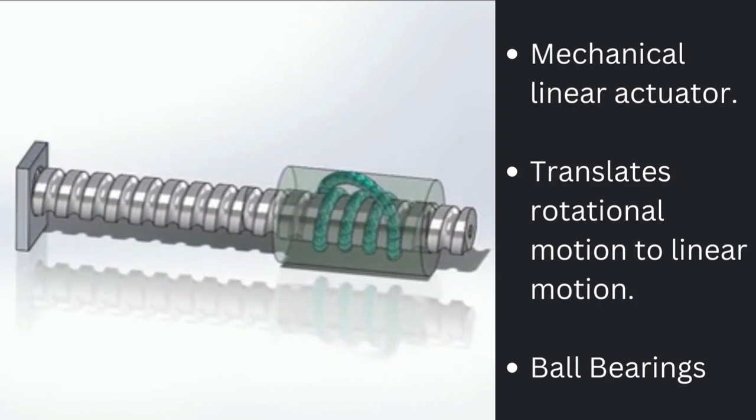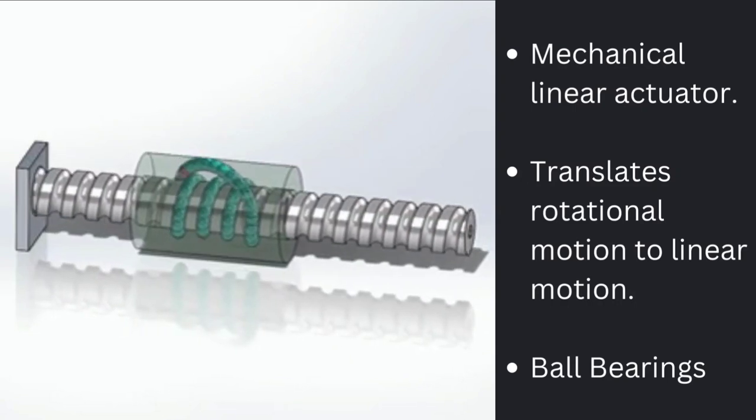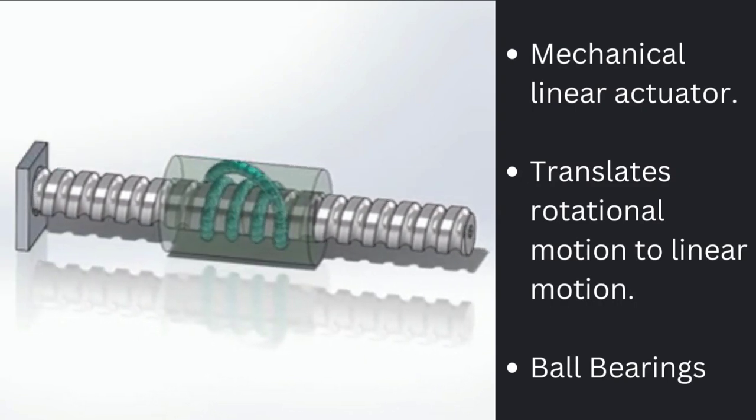It can withstand high thrust loads. The ball assembly acts as the nut while the threaded shaft acts as the screw.